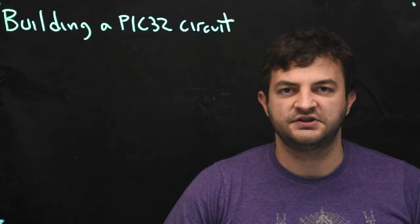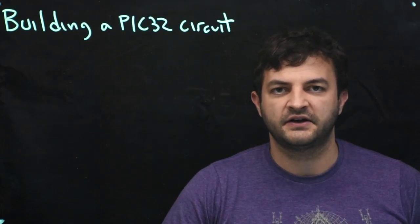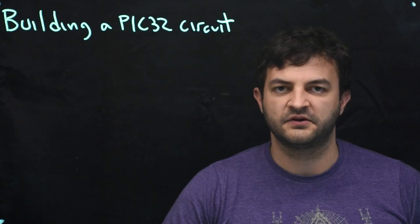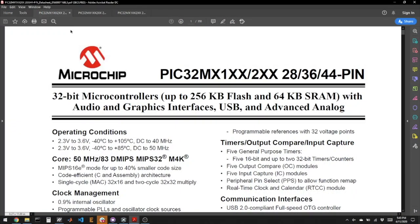So let's take a quick look at the data sheet for this particular series of PIC to see what its capabilities are and what it suggests for the minimum connections. So here I'm looking at the data sheet for the PIC. It's 350 pages. This is the first page for the 100 and 200 series.